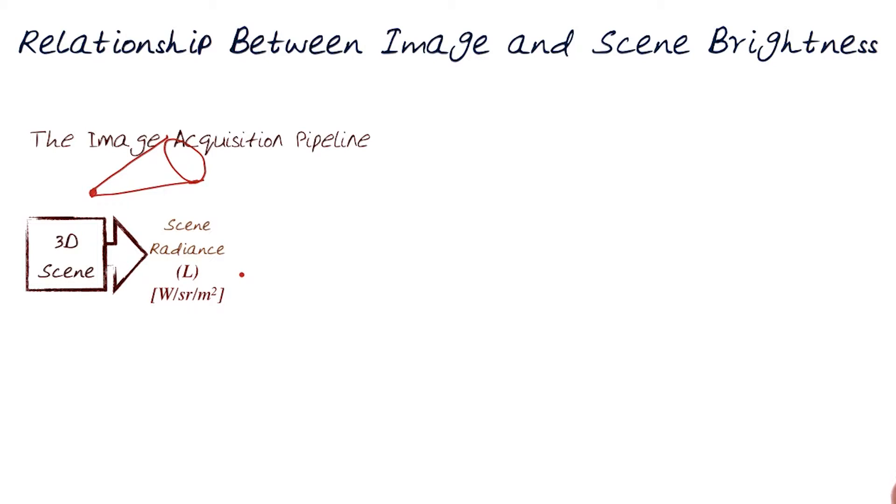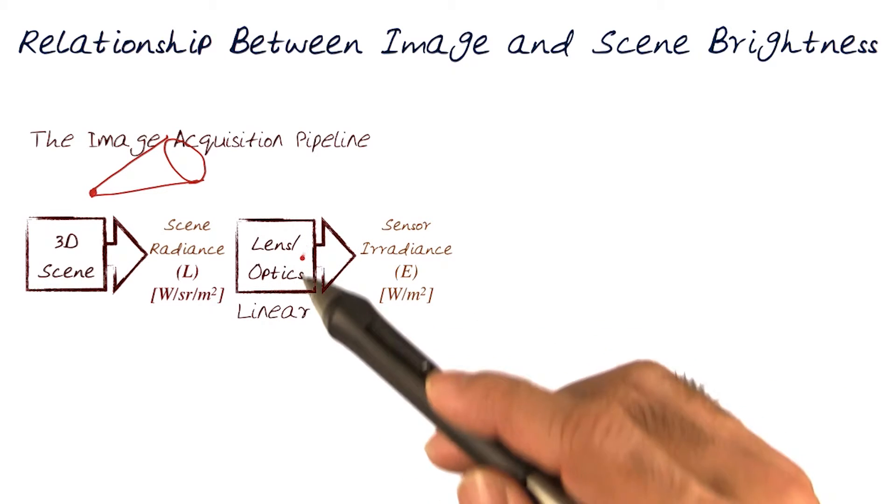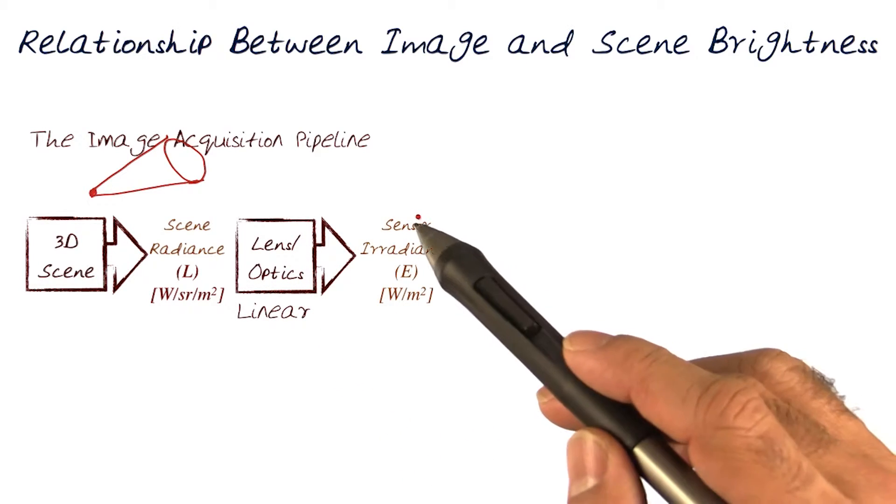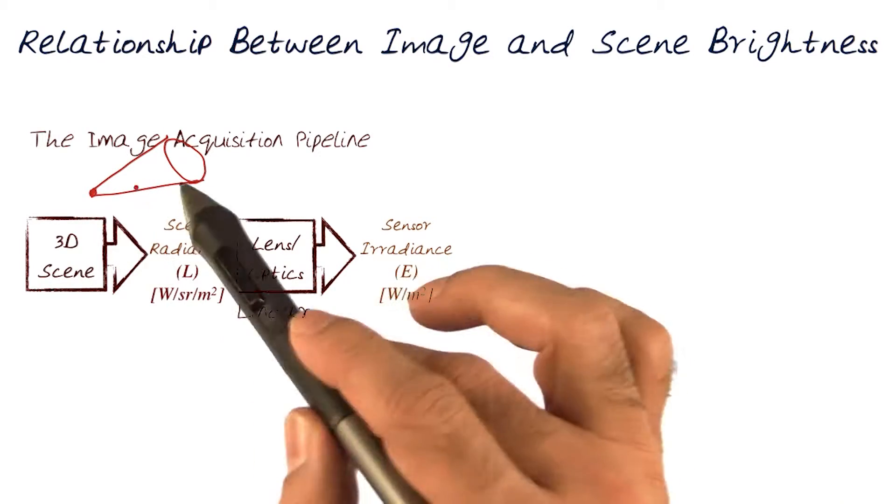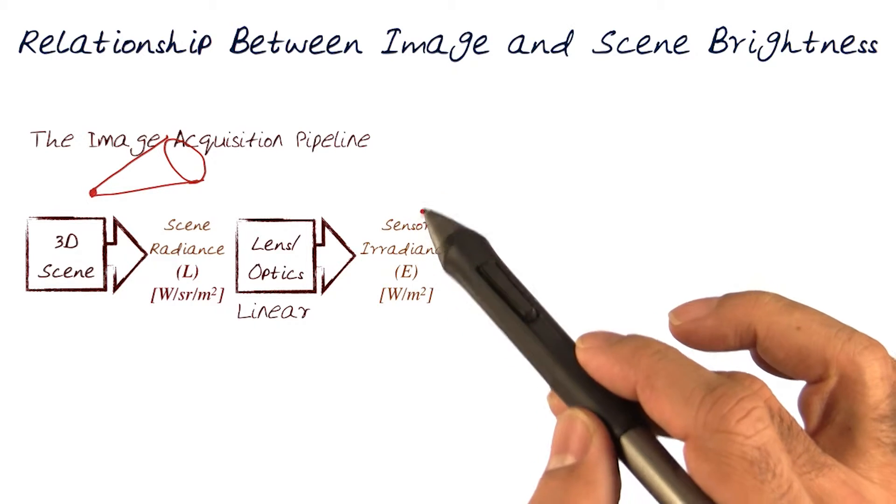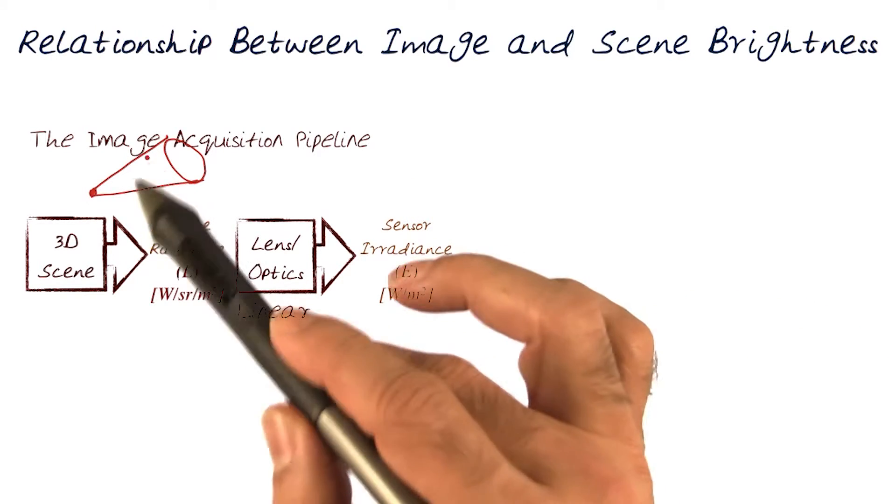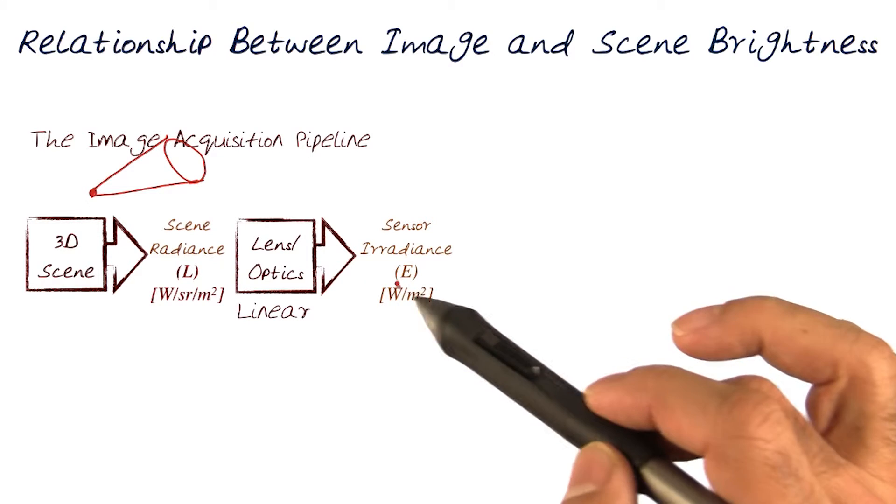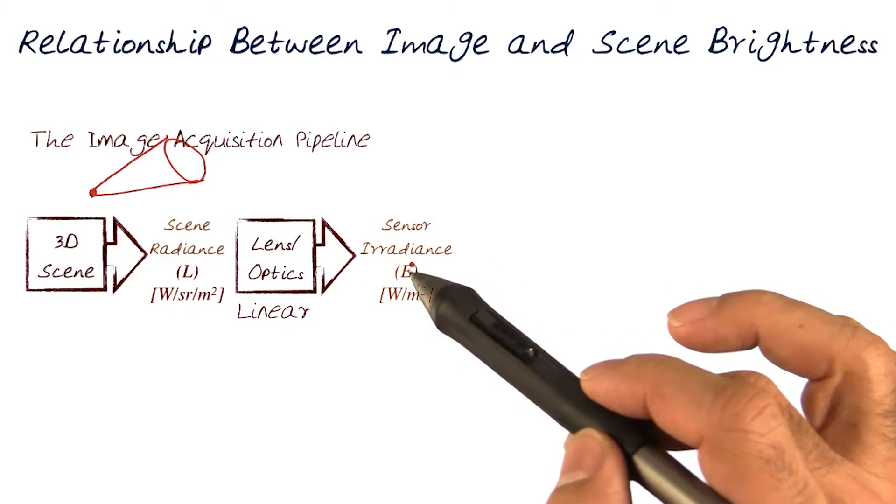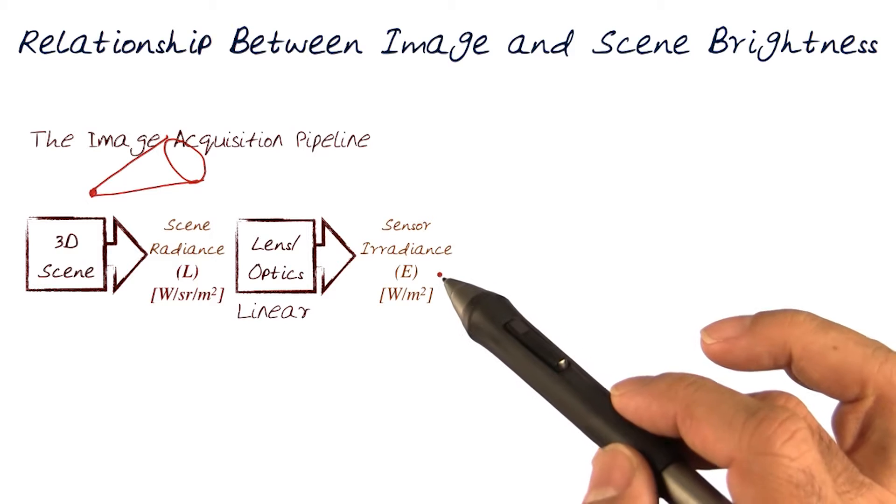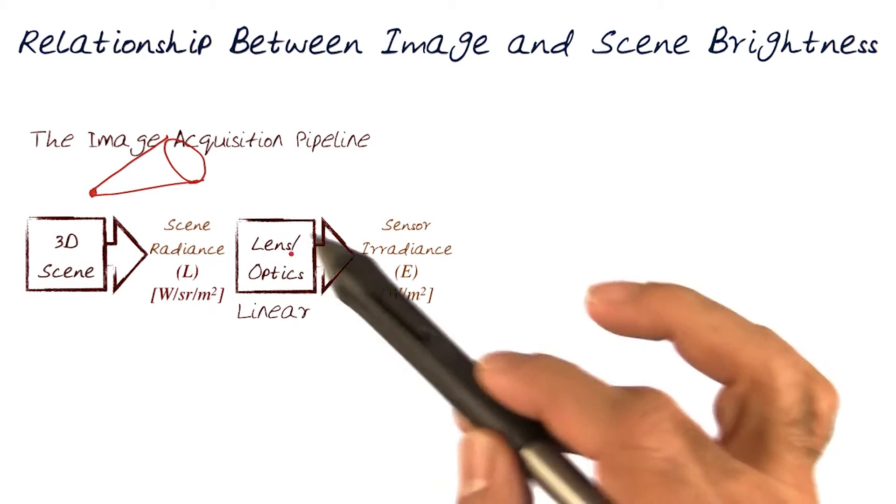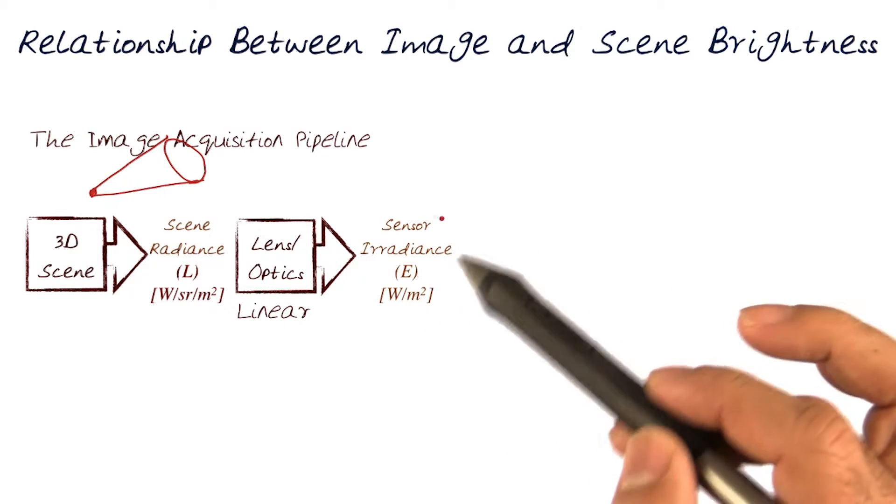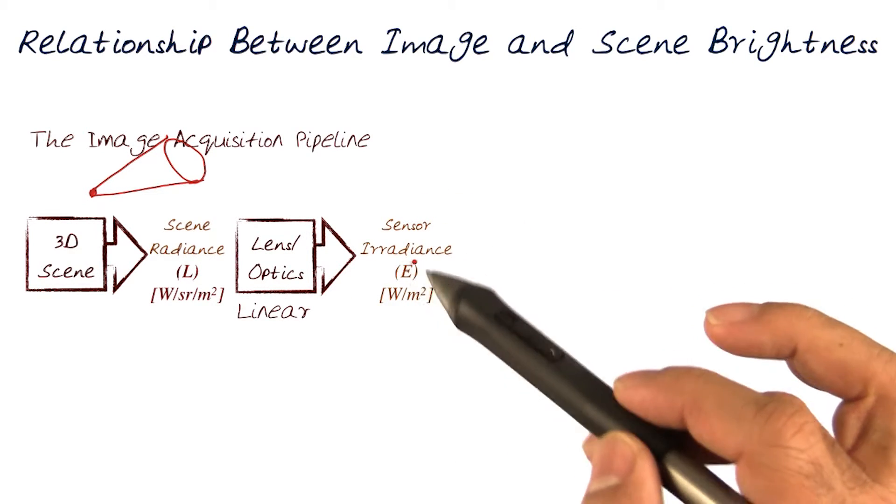When we have a 3D scene, to capture an image from it, what do we need? Optics. Here we use the lens and optics, and that converts all of this 3D light information. That's why we have the solid angle and the cone coming in. Now we have a 2D sensor. We do not have the information from steradian, but we do have watts per meter squared, and we know that is sensor irradiance, referred to as E. This is a linear mapping. Once I know this, when it hits the sensor, I know what this measure would be.